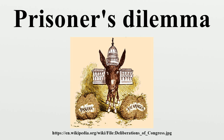Two members of a criminal gang are arrested and imprisoned. Each prisoner is in solitary confinement with no means of communicating with the other. The prosecutors lack sufficient evidence to convict the pair on the principal charge. They hope to get both sentenced to a year in prison on a lesser charge. Simultaneously, the prosecutors offer each prisoner a bargain. Each prisoner is given the opportunity either to betray the other by testifying that the other committed the crime, or to cooperate with the other by remaining silent.